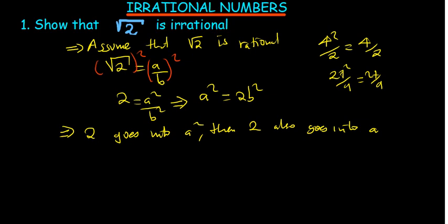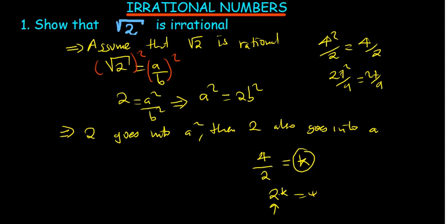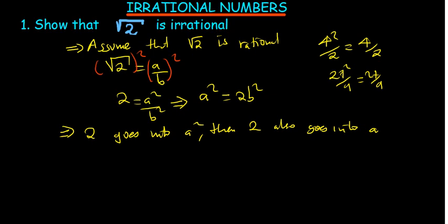If 2 can go into A, there is a number we can multiply with 2 to get A. For example, 2 goes into 4 and gives 2, which we can write as 2 times K equals 4. So whenever a number divides another number, there is a constant K such that 2 times K equals A.